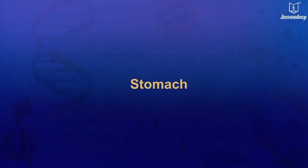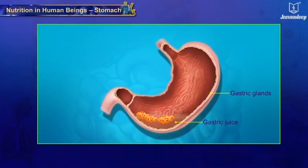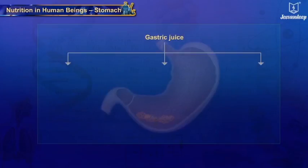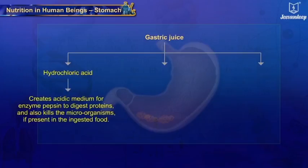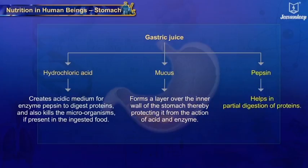Stomach: as food reaches the stomach, it stimulates the gastric glands present in the inner walls to secrete gastric juice. Gastric juice comprises three main components: (a) hydrochloric acid — creates an acidic medium for enzyme pepsin to digest proteins and also kills microorganisms in the ingested food; (b) mucus — forms a layer over the inner wall of the stomach, protecting it from the action of acid and enzyme; and (c) pepsin — enzyme pepsin helps in partial digestion of proteins.